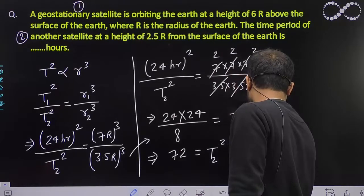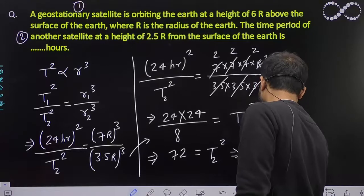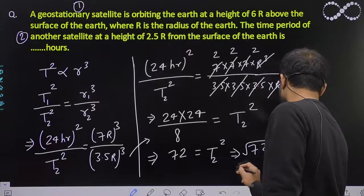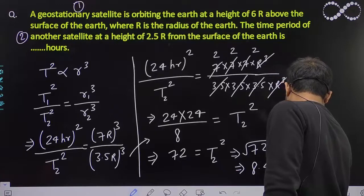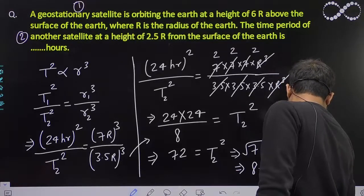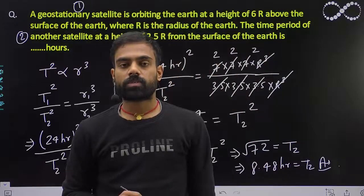From here I can say 2 squared root, and that will be T2. If you will do this, it will get approximately 8.48 hours. That will be T2 and that will be the answer. Okay students, I hope you understood this question.